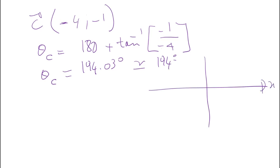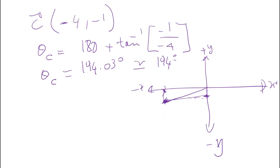So theta_C is just 194 degrees. Now on the reference: x positive, y positive, x negative, y negative. Negative four will be somewhere on the negative x side, negative one will be on the negative y side, and the intersection of these two gives us the coordinate of our vector. This is 180 degrees, and the total angle here is 194 degrees. That makes sense.